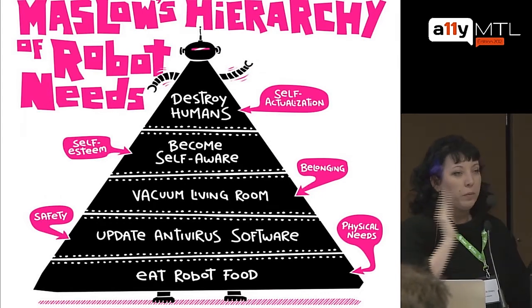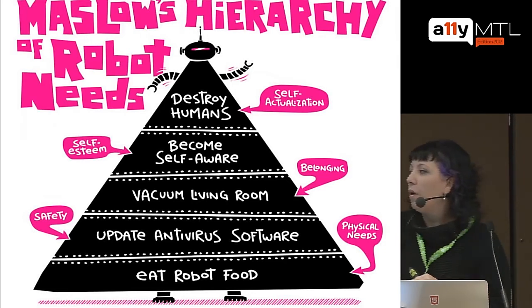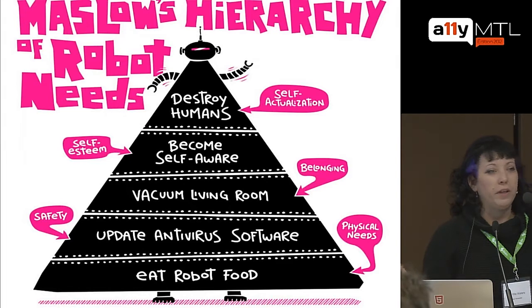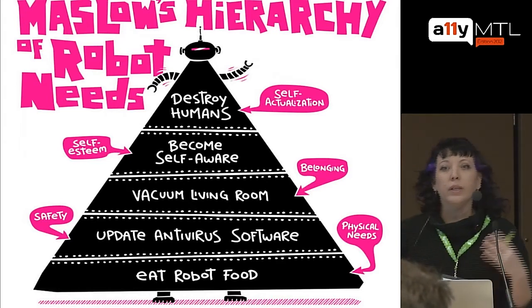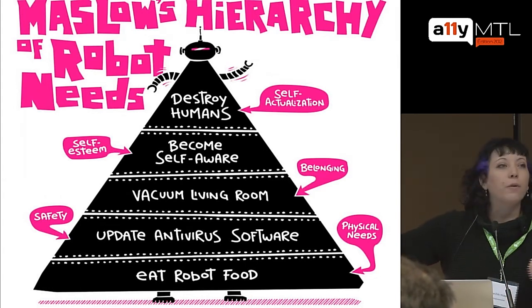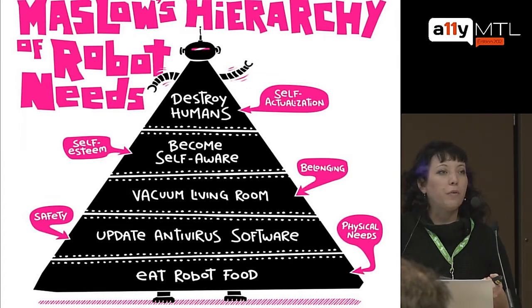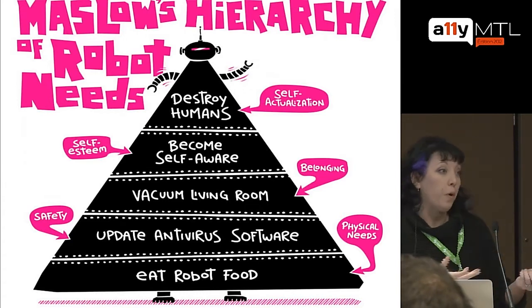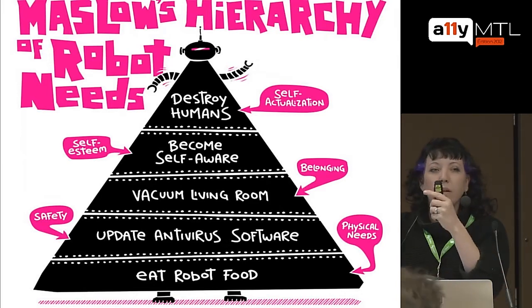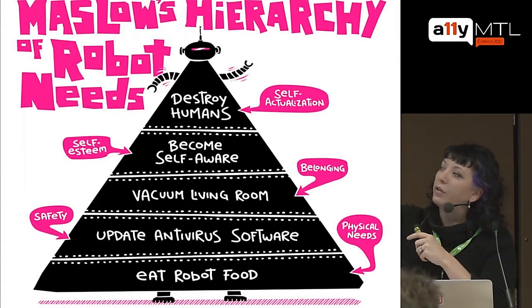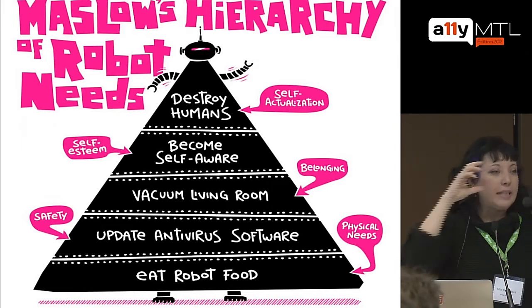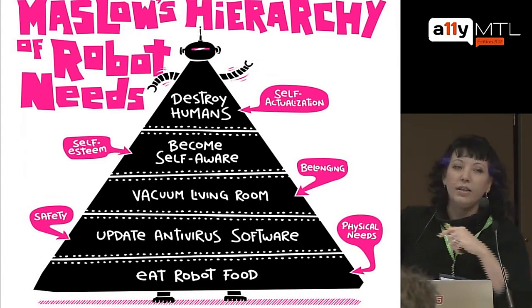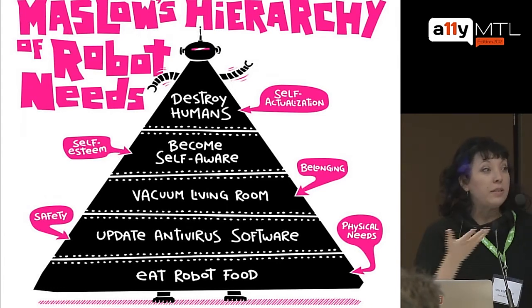Because we're all a bunch of geeks, I thought robot needs would make a lot more sense. At the bottom level of Maslow's Hierarchy of Robot Needs would be physical needs — for robots, that's eat robot food, basic survival skills. One step up is safety needs: the robot updates its antivirus software. One more level up is belonging: the robot vacuums the living room. Then there's self-awareness — the self-esteem level. And at the tiny top level, self-actualization: destroy humans, as we're all aware.